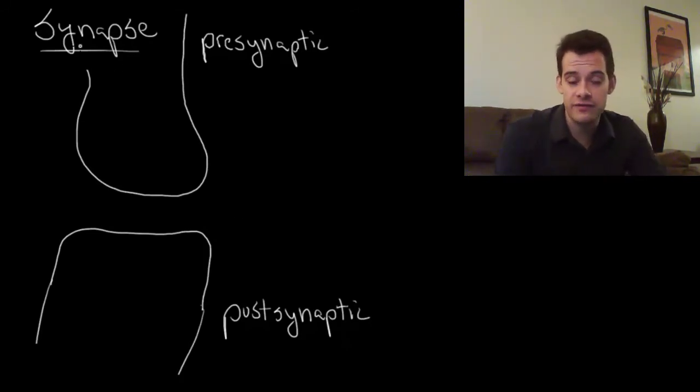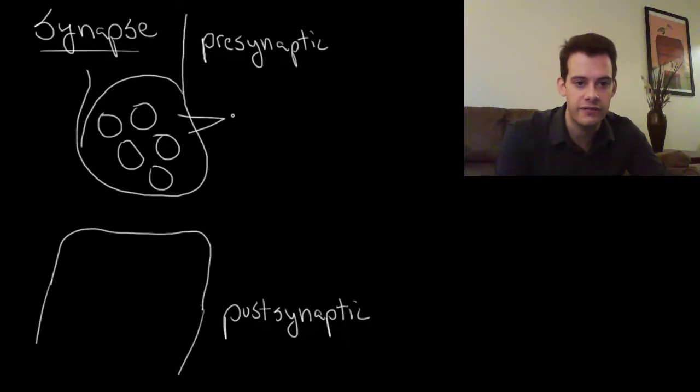Well, what happens is the first neuron has fired an action potential, so it sent the message down its axon and the message reaches the terminal button here. Then what happens is inside the terminal button we have these bags, and these bags are called vesicles. Inside the vesicles are chemical messengers, and this is a neurotransmitter.